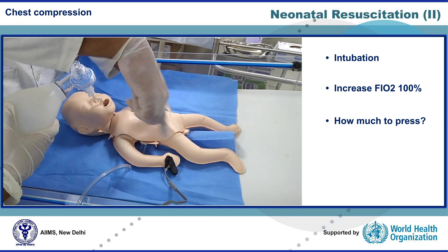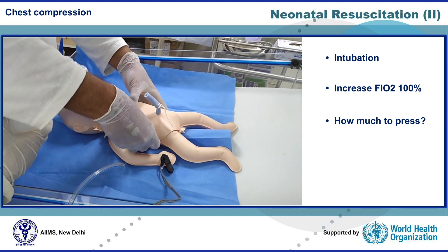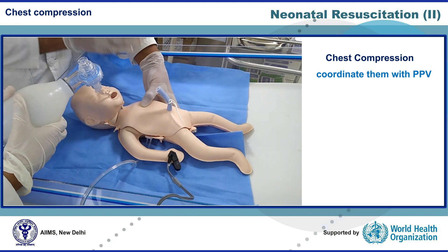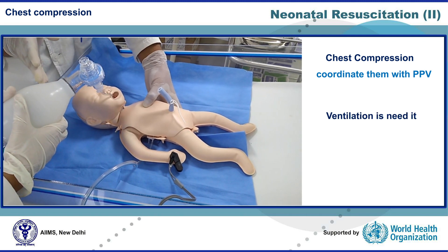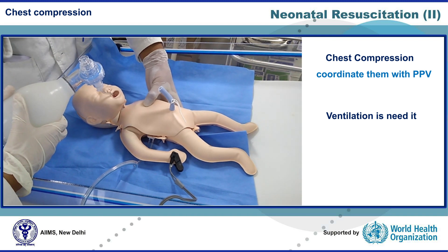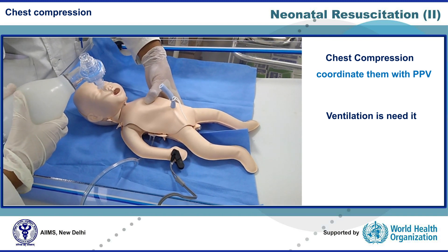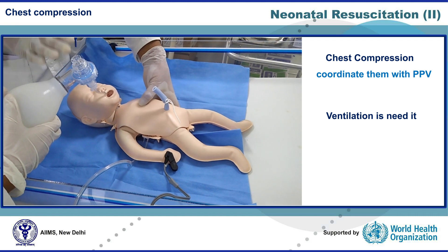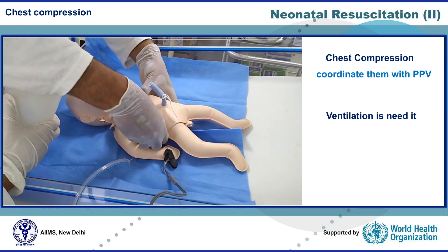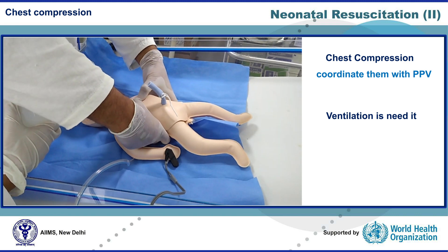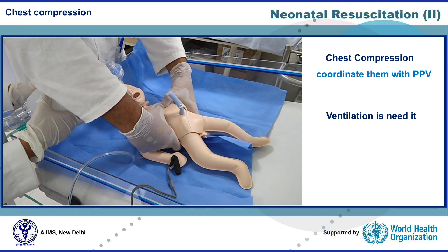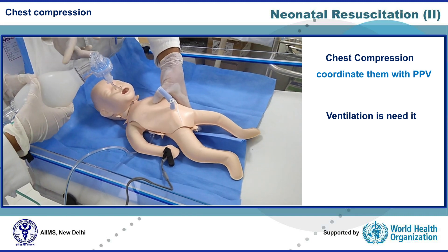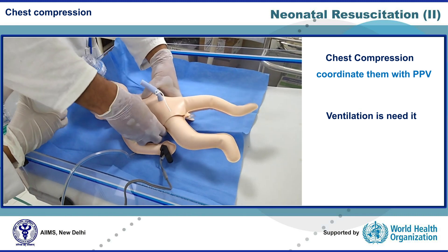For every three chest compressions, one ventilation is needed — a 3-to-1 ratio. These four events should finish in two seconds, so that in one full minute we achieve 90 compressions and 30 ventilations. To achieve this rate, the mantra used is: 'one and two and three and squeeze,' where on one, two, and three we compress and release, and on 'squeeze' we give ventilation and release.